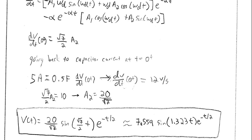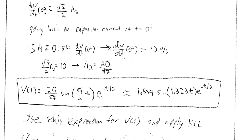Plugging A₁ equals zero, A₂ equals 20/√7, V_SS equals zero, ω_D equals √7/2, and α equals one-half into the general form, V(t) equals (20/√7)·sin(√7/2·t)·e^(−t/2). Approximating numerically, this is approximately 7.559·sin(1.323·t)·e^(−t/2).